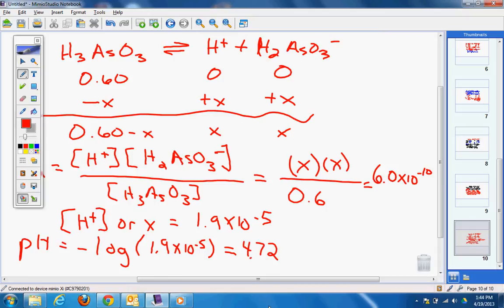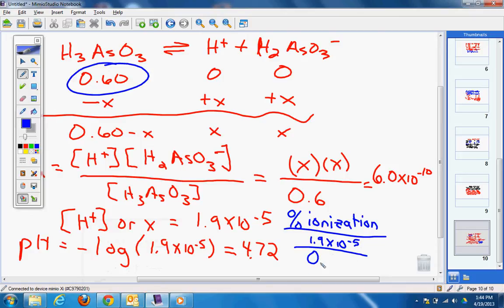However, it asks you to do the percent ionization. This is something that AP may ask you to do that I haven't talked about before. How would you do that? What's the percent? We're going to take our 1.9 times 10 to the negative 5th and divide it by what we started with, 0.60, multiply by 100.